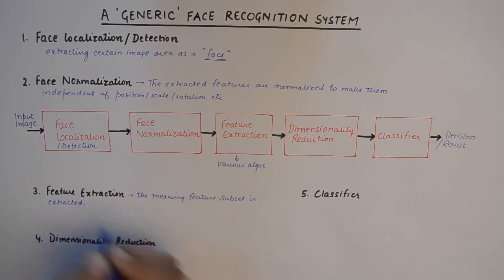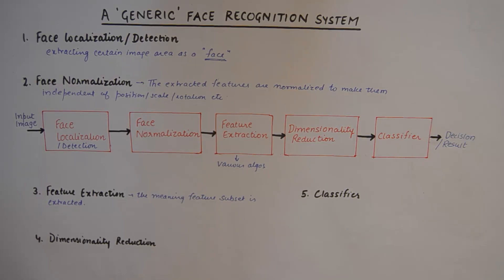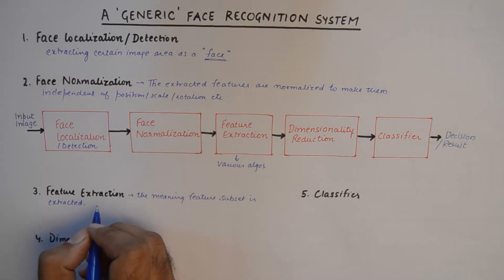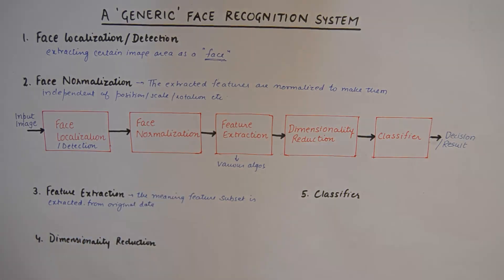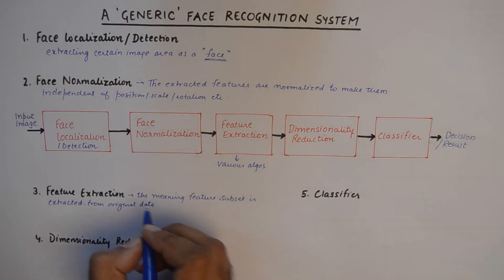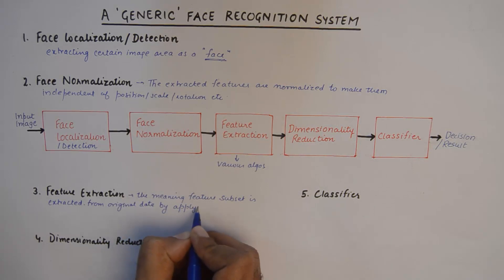This point is very important: a face could have, say, 25 identified features, but for a particular system we may identify only 10 face features ranging from eyebrows, eyes, nostrils, upper lip, lower lip, and so on. So out of all the face features, we identify that we are going to work with 10 meaningful features. This meaningful feature subset is extracted from the original data — the normalized face — by applying certain rules.